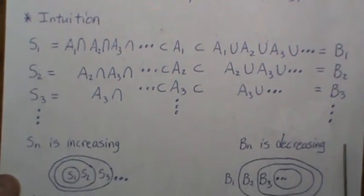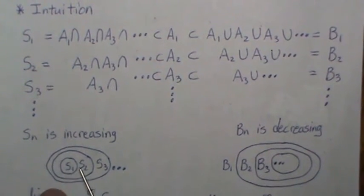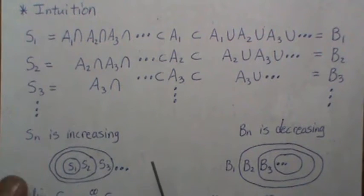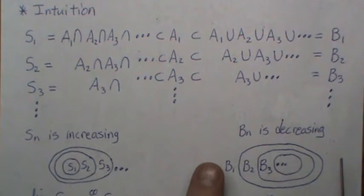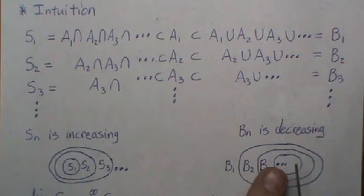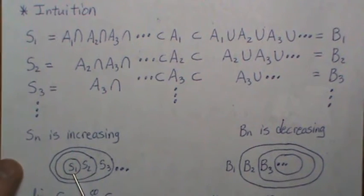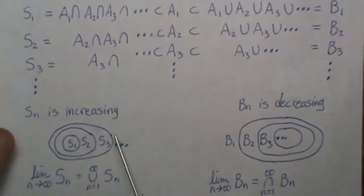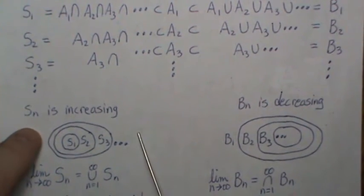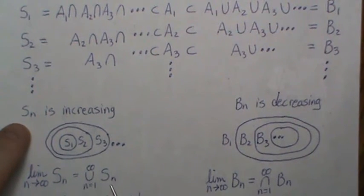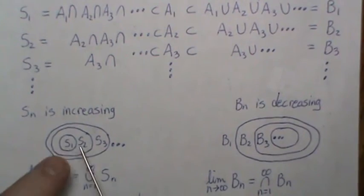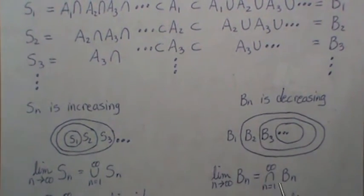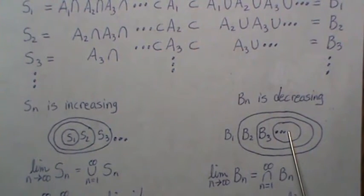Pictorially, S grows: S_1 is smallest, S_2 a little bigger, S_3 bigger still. For B it's the opposite: B_1 is the biggest, then B_2, then B_3 — they decrease. The limit of S_n is just the union of all the S_n's, since it keeps growing. The limit of B_n is the intersection of all the B_n's, since it keeps shrinking.